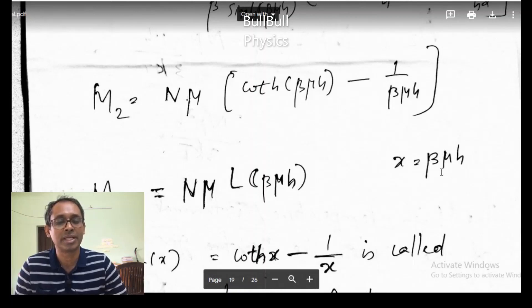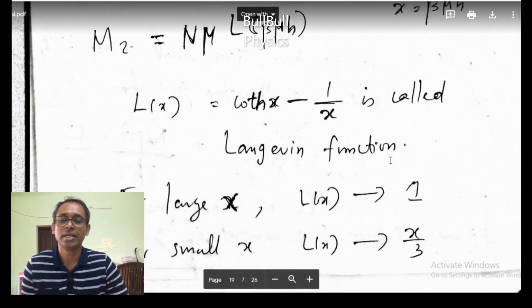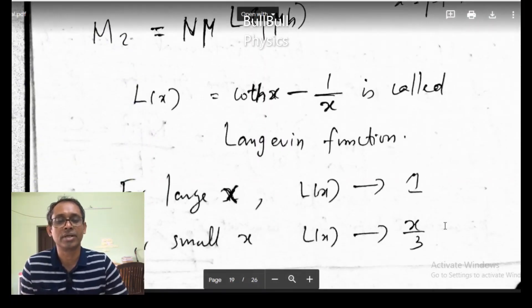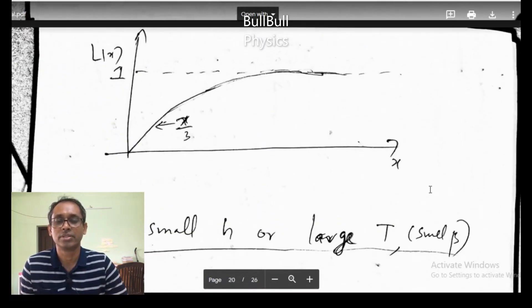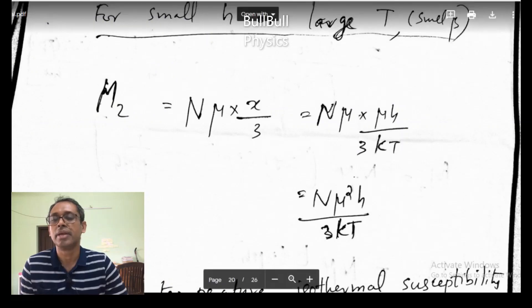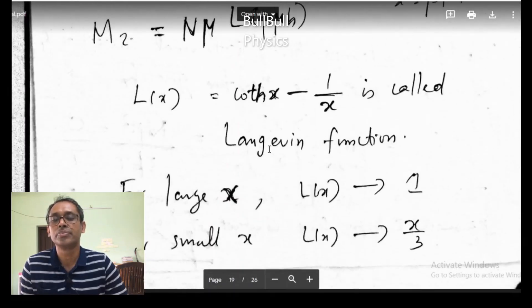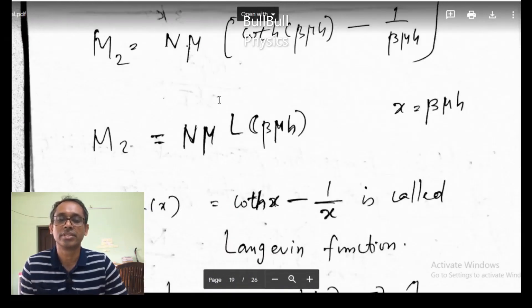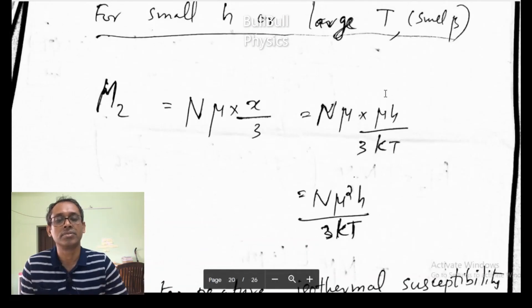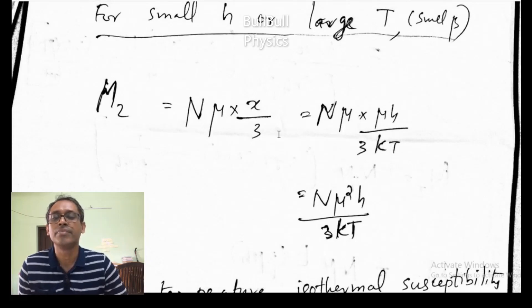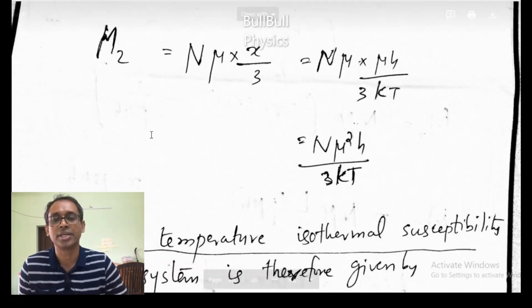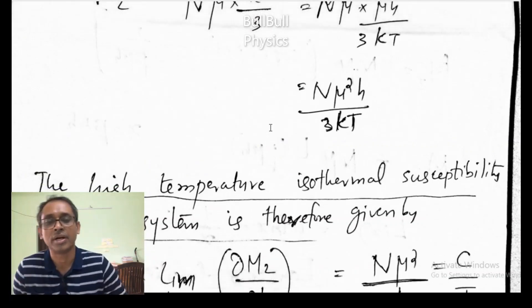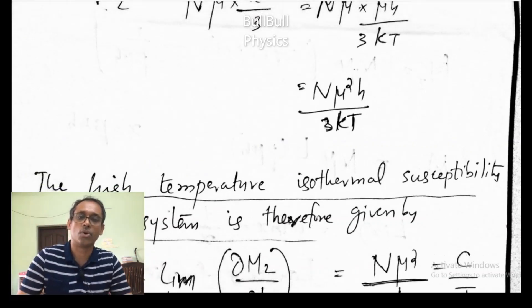H is small and temperature is large. So in that case, for small x, we know the Langevin function tends to x/3. Here x is beta mu H. So I can write M_z as N mu times x/3, where x is beta mu H = mu H / (3 k_B T). So M_z = N mu² H / (3 k_B T). This is for high temperature or low field.